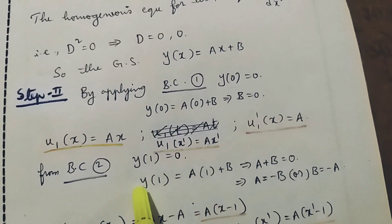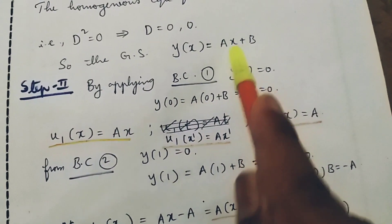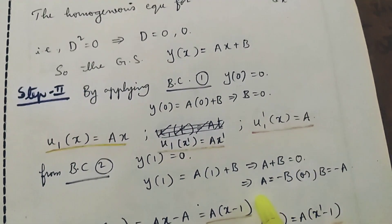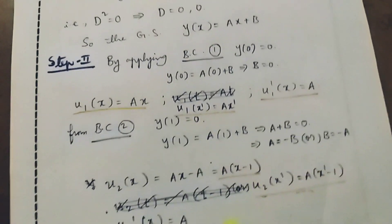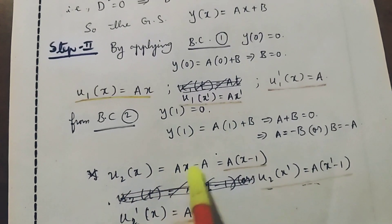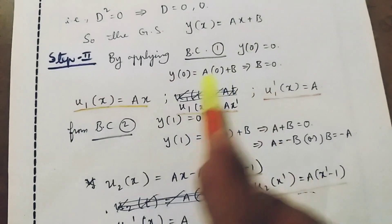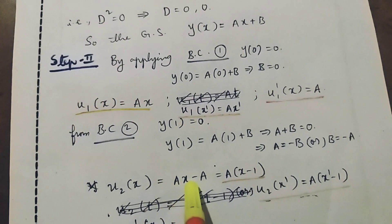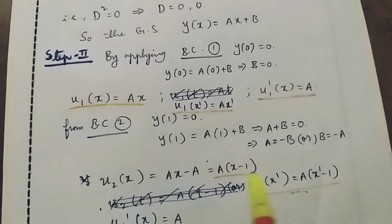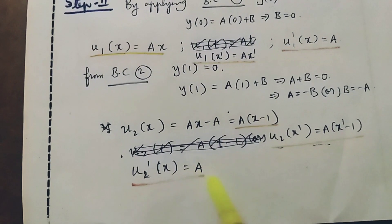From boundary condition two, y of one equal to zero: substituting x equal to one gives a plus b equal to zero, which implies b equal to minus a. Then u₂ of x equal to a(x minus 1), u₂ of x' equal to a(x' minus 1), and u₂ dash of x equal to a.